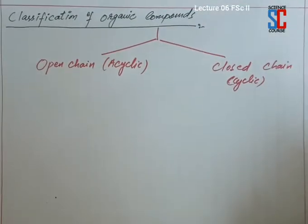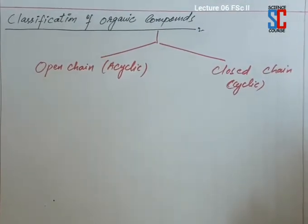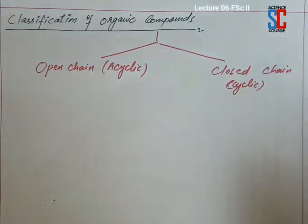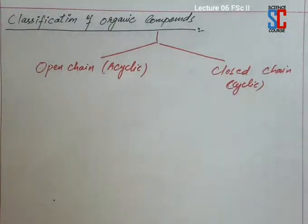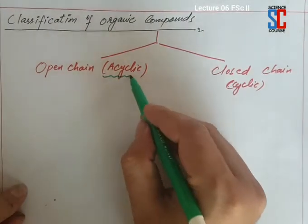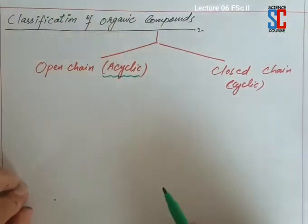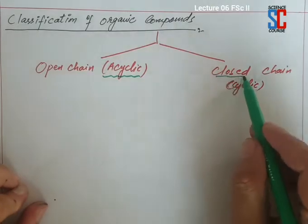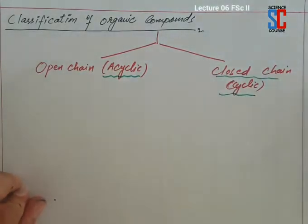Classification of organic compounds. Organic compounds are classified into two major types: open chain organic compound and closed chain organic compound. Open chain are also called acyclic compounds in which atoms do not combine to form a ring, while closed chain are also called cyclic compounds.